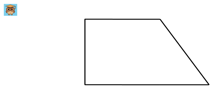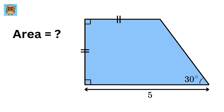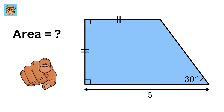This geometry problem is so oddly satisfying, like an ASMR video. We have been given a trapezium, and both of these sides are equal, and these are 90 degrees. This angle is 30 degrees, and this side is of length 5. What is the area of this trapezium? Can you solve it?